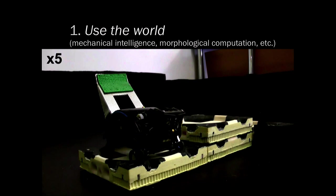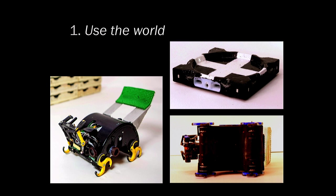Another way they're using the world is to help with localization. On the upper surfaces of these blocks there are black and white markings. On the bottom face of the robot there are six infrared sensors — basically a six-pixel black and white camera looking straight down. As a robot moves around on top of a structure built out of these blocks, it sees different patterns of black and white, and that helps it keep track of where it's moving relative to the structure.